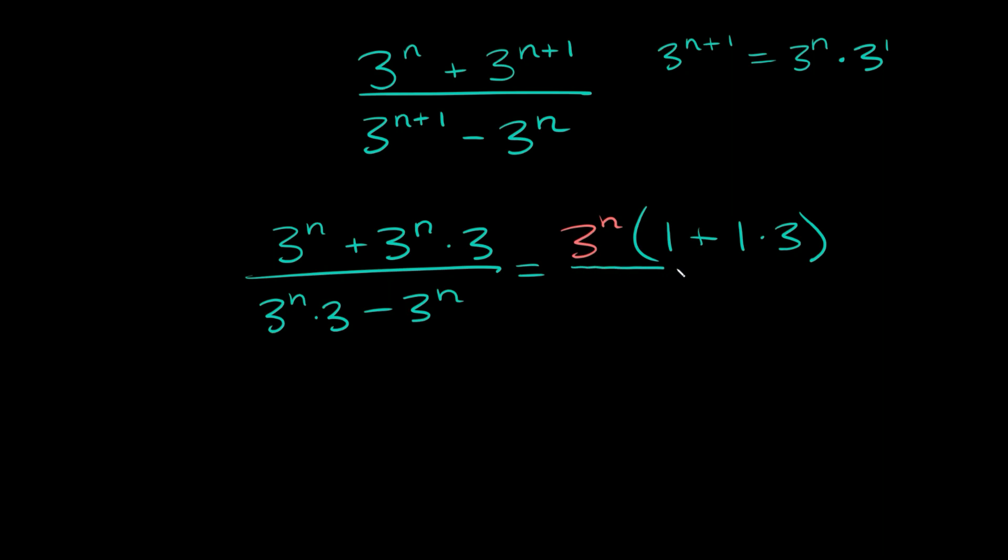So then on the bottom, we can again factor out the same thing, a 3 raised to the n and then in parentheses, we're going to be left with, let's see, 1 times 3 again and minus 1.